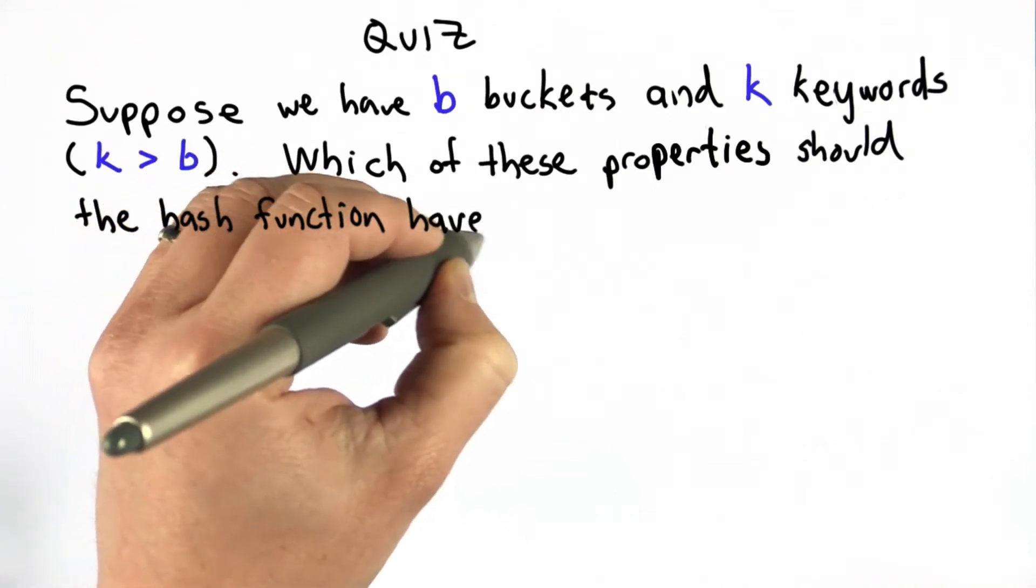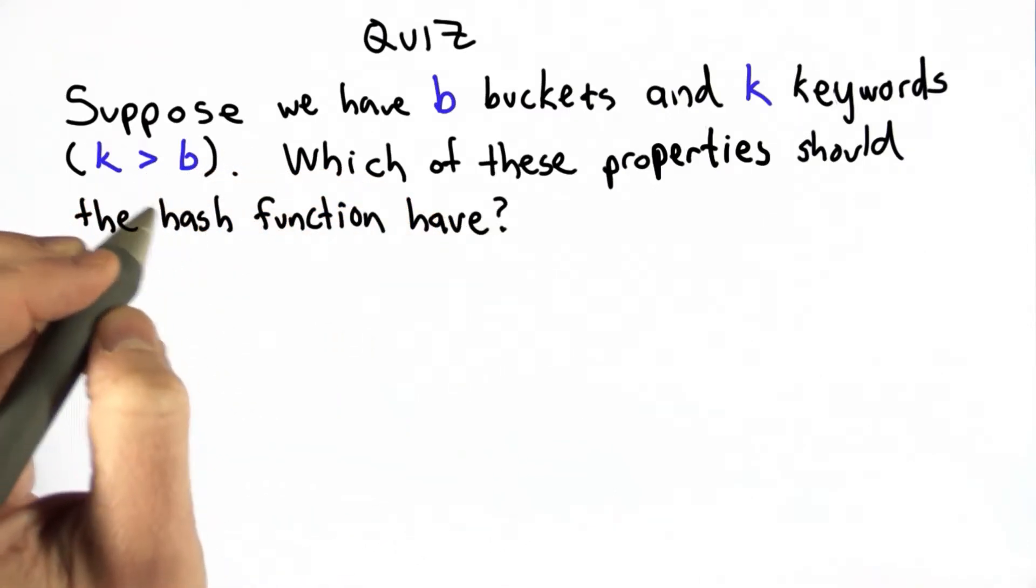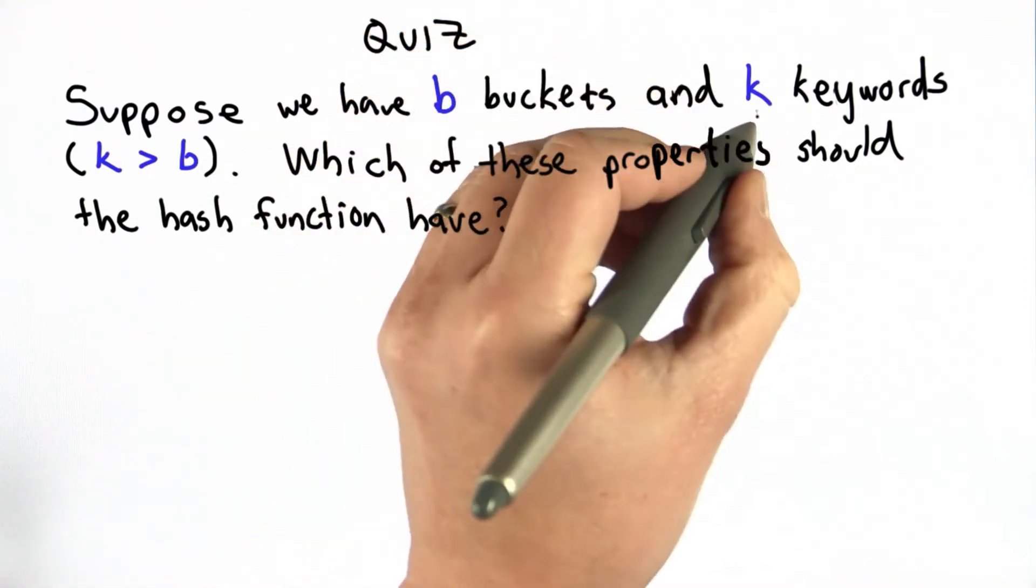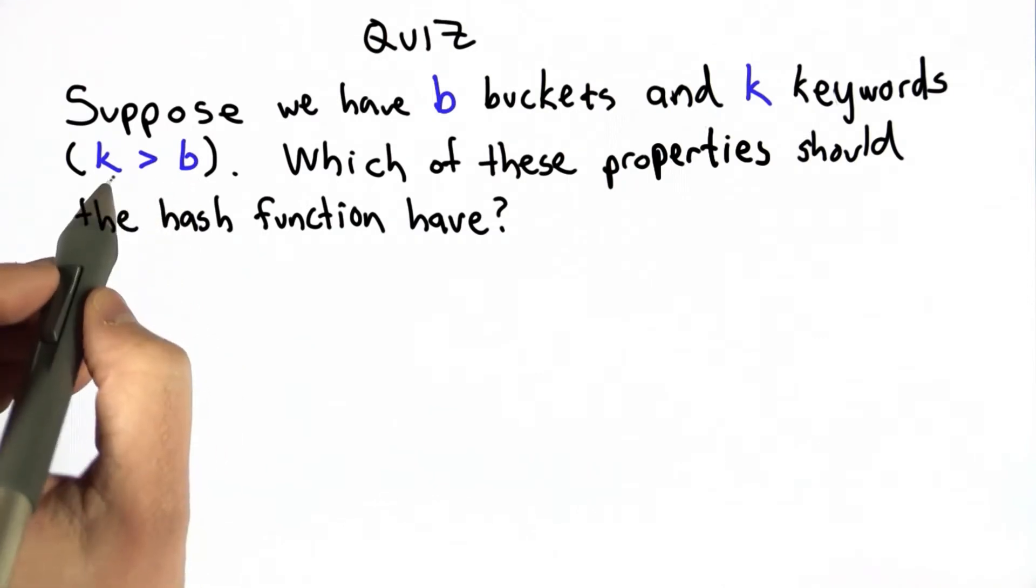So now we're ready for a quiz to see if you understand the goal of a hash table. The question is if we have b buckets in our hash table, and we have k keywords, and we should assume that k is much greater than b, that there are more keywords than we have buckets.